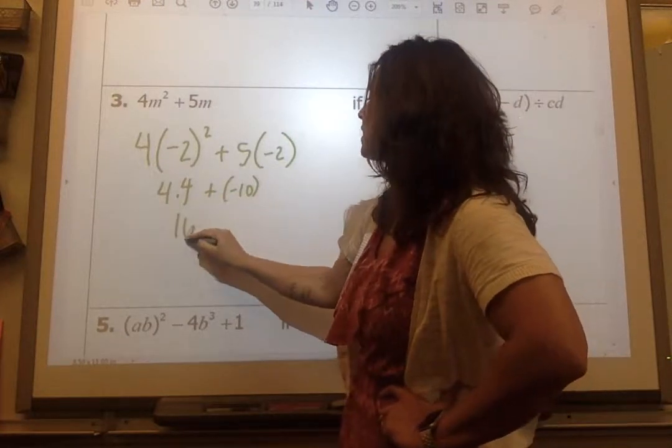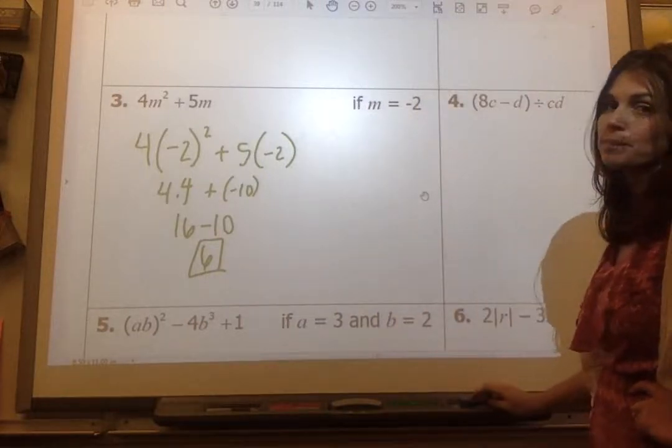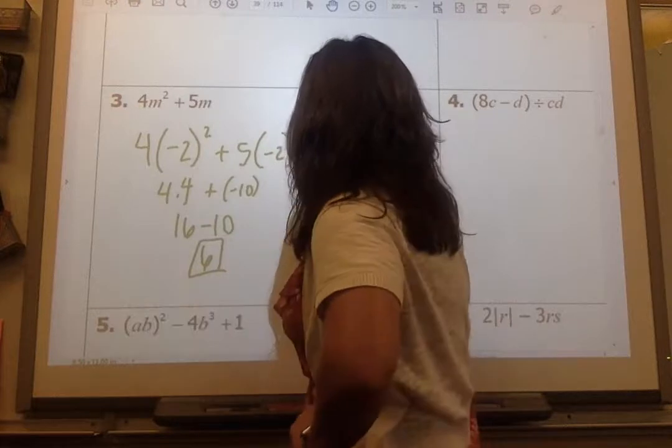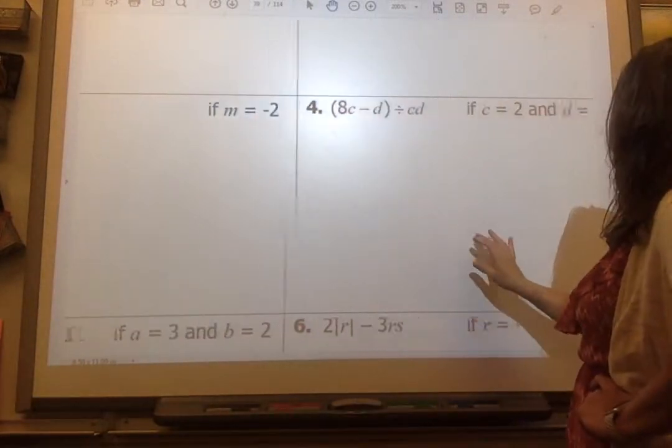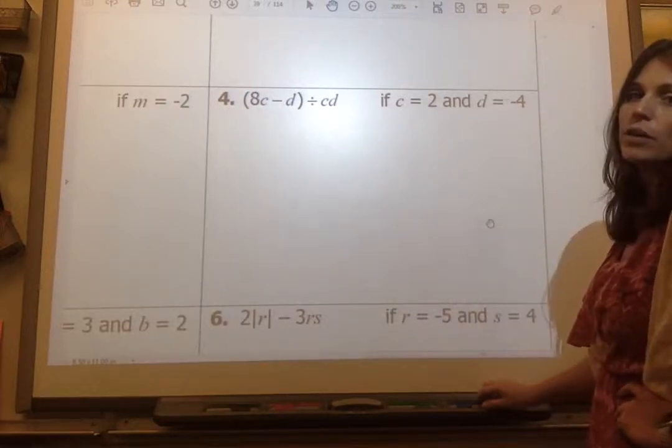Now order of operation tells me I'm going to square it first. So negative 2 squared is 4. 4 times 4 plus this negative 10. And that's not simplified. I can't stand that. So I get 16 minus 10, which is 6. So 6 is going to be my final answer.